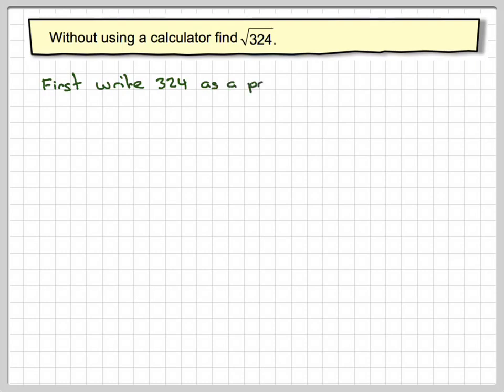So first, if you take 324 and write it as a product of its prime factors, we have two ways of doing that. Using repeated division, it's an even number, so 2 is the first prime number that goes in.